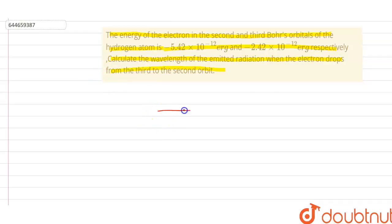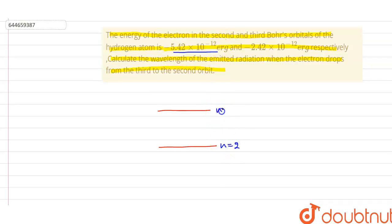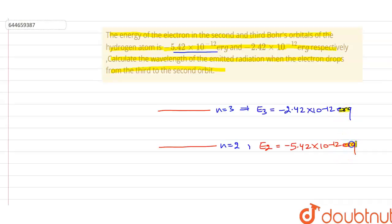To solve this question, first we need to understand diagrammatically what is being said. We have the energy of the electron at the second orbital and the third orbital. The energy at n=2 is -5.42×10⁻¹² erg, and at n=3 it is -2.40×10⁻¹² erg. Erg is the unit of energy here.